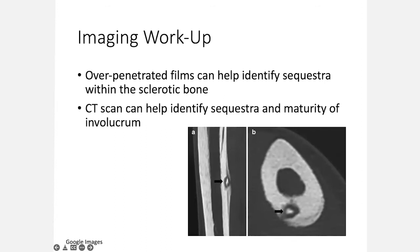In terms of your imaging workup, you need to get x-rays of the bone involved as well as the joint above and below. You're looking for joint involvement, signs of stiffness or sclerosis. Overpenetrated films can help identify sequestra within sclerotic bone. If you have access to CT scan, this can be very helpful in determining the sites as well as the maturity of the involucrum when you're planning your surgical management.